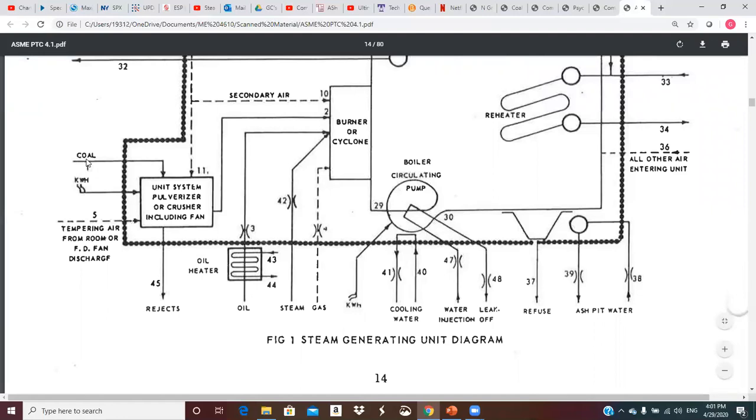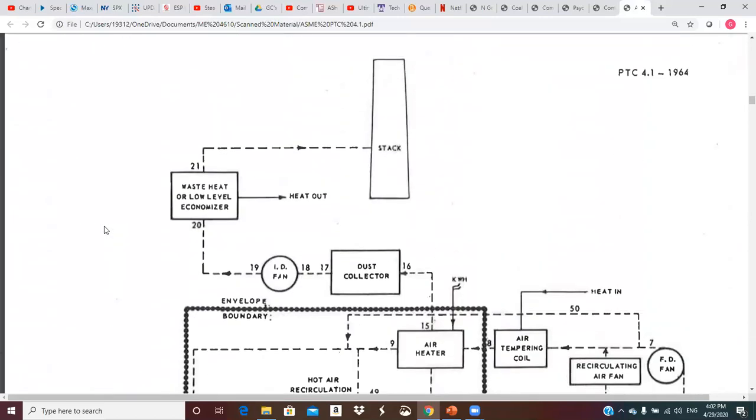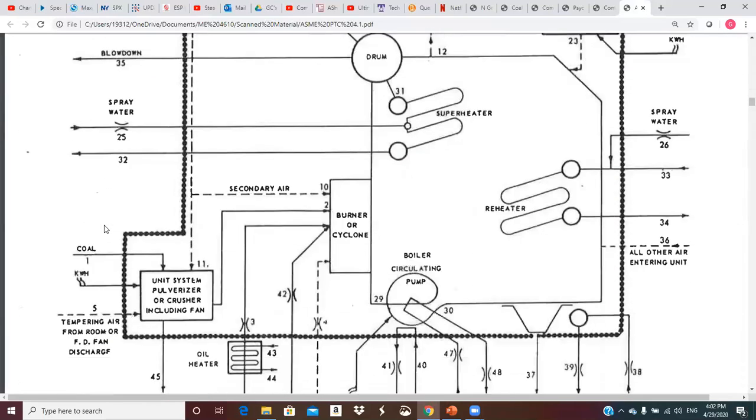So let's come down here. And good old number one is coal. So coal crosses the boundary into the analysis, and it goes into unit system pulverizer or crusher, including fan. So that's inside the control volume. We have some electrical energy potentially going into this. This could be motor driven pulverizers, et cetera. It could be fans in here, including fan. So it takes electrical energy to run those motors. That crosses the control volume. That has to be quantified.